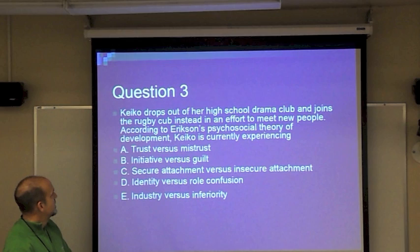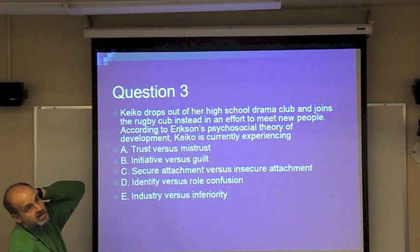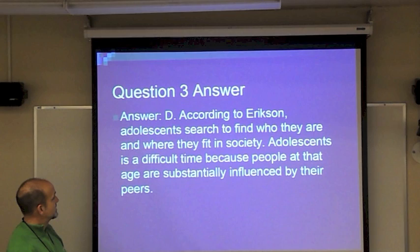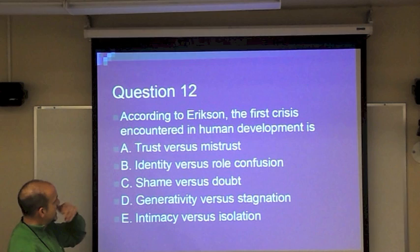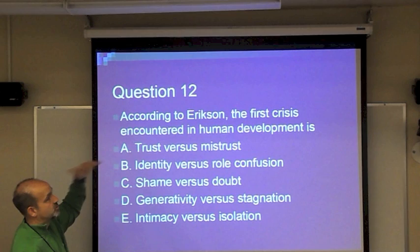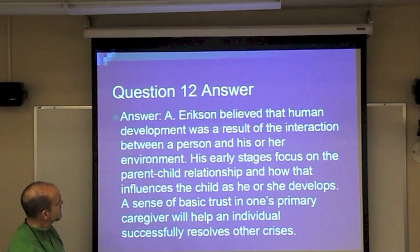Quiz questions from Erikson: Kiko drops out of drama club and joins rugby to meet new people — she is changing what she likes and trying to figure out who she is, so she's experiencing identity vs. role confusion. The first crisis — trust vs. mistrust — is the most important because the child is helpless and must learn to trust their caregiver. The answer is trust vs. mistrust.